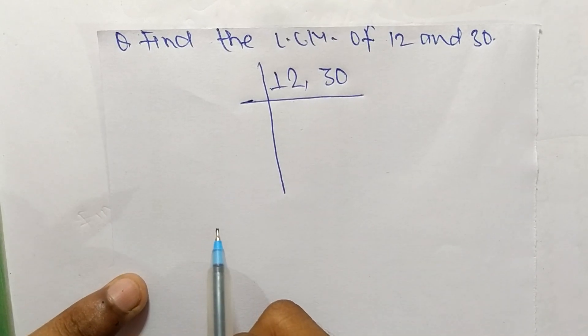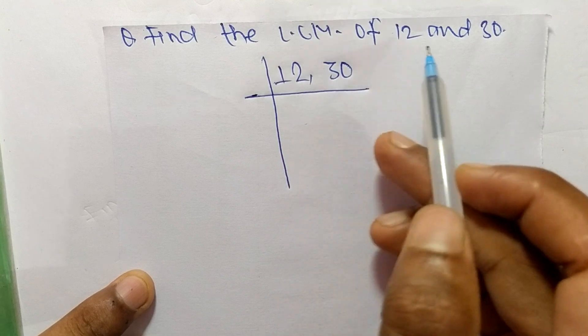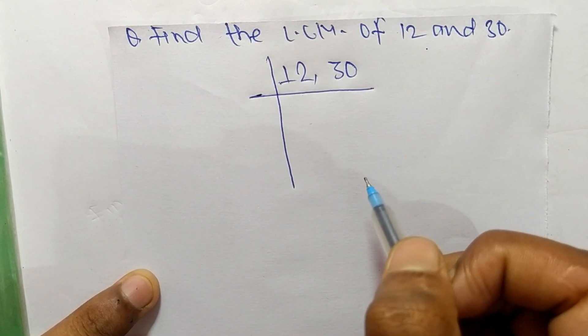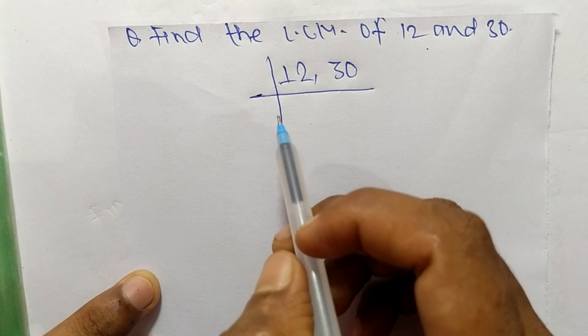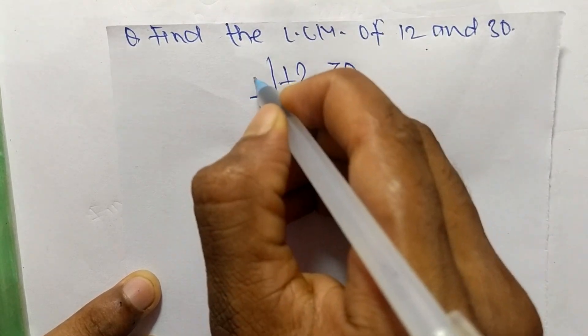So today in this video we shall learn to find the LCM of 12 and 30. To find LCM, first we have to choose the lowest number which can exactly divide 12 and 30. So the number is 2.